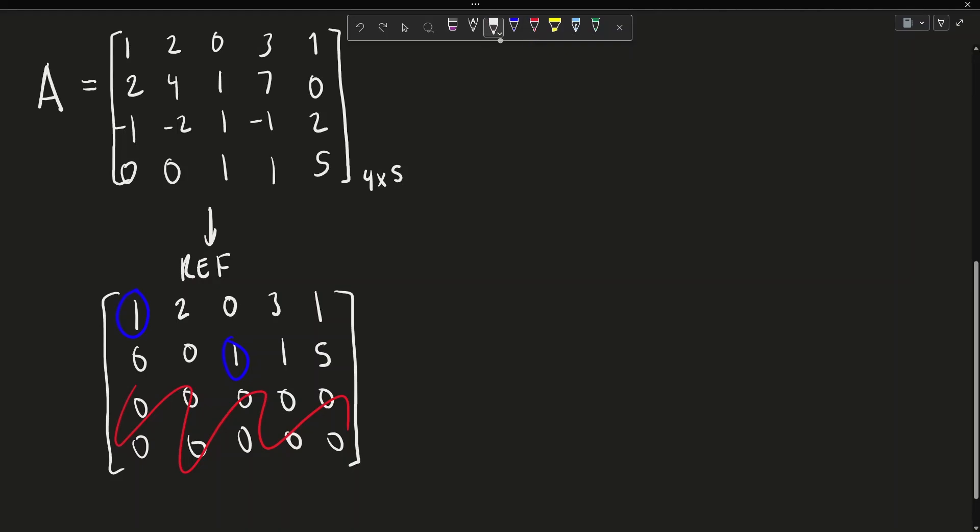And so first we'll find the matrix C. And again, we know that the pivots are in column 1 and column 3. So that means we find column 1 and column 3 in the original matrix A, and these two columns constitute the columns of C.